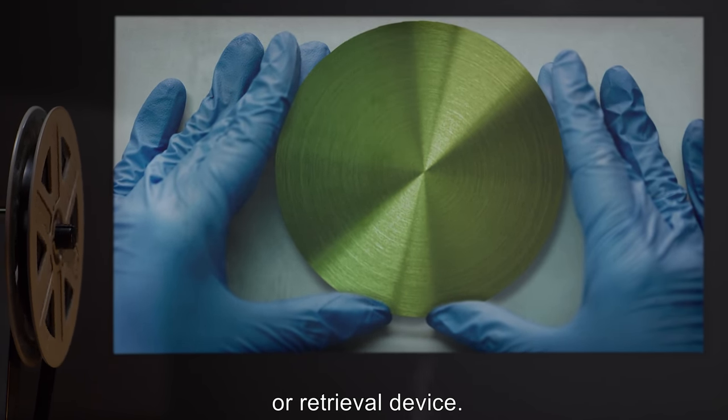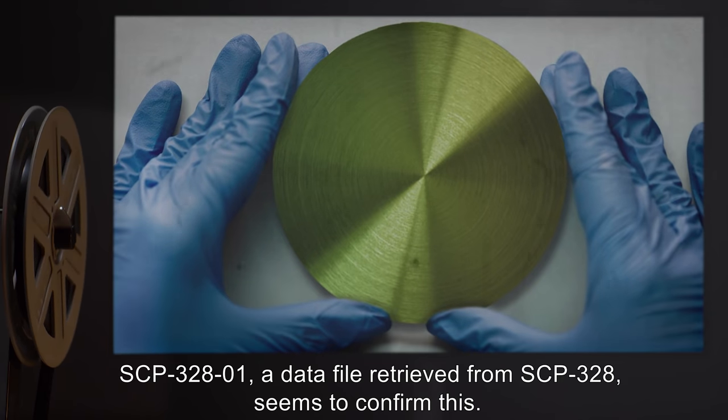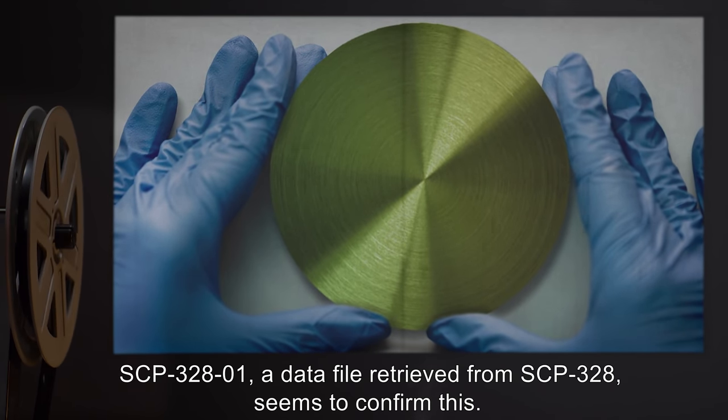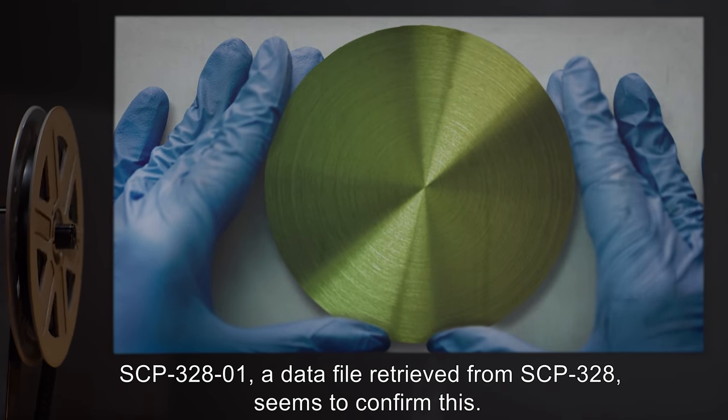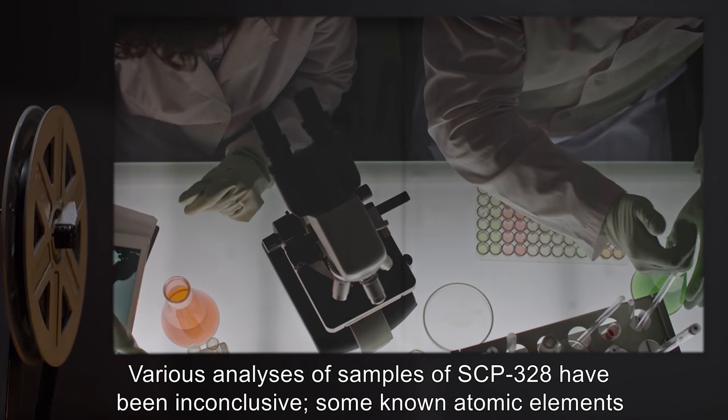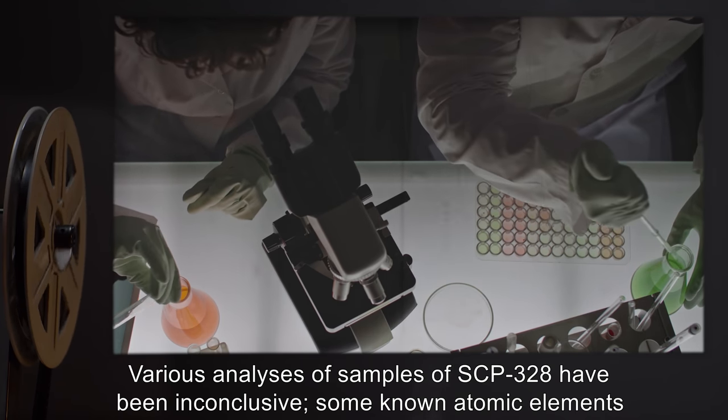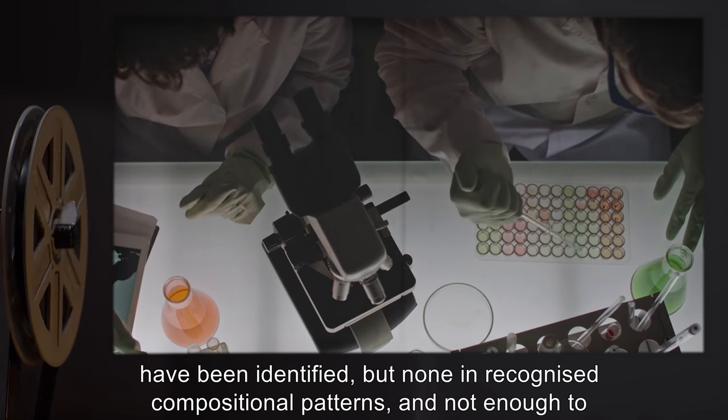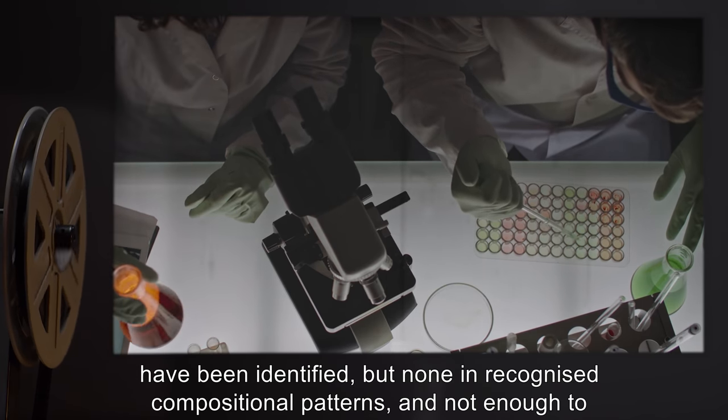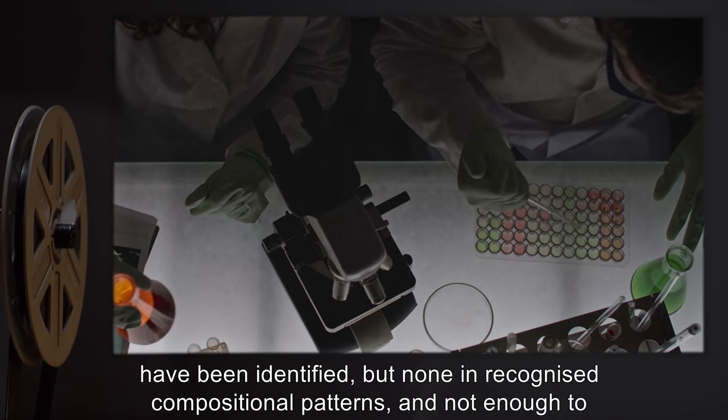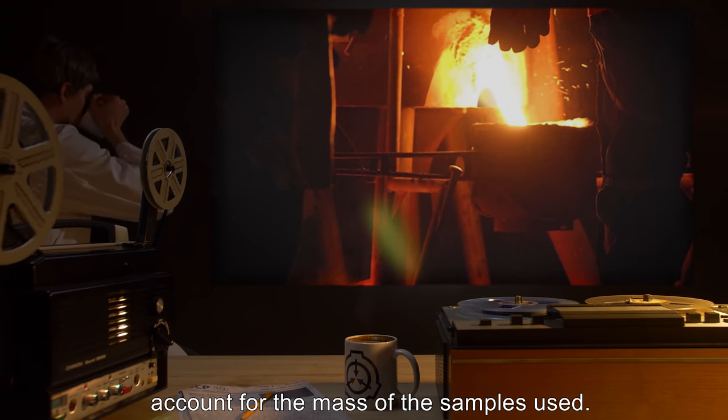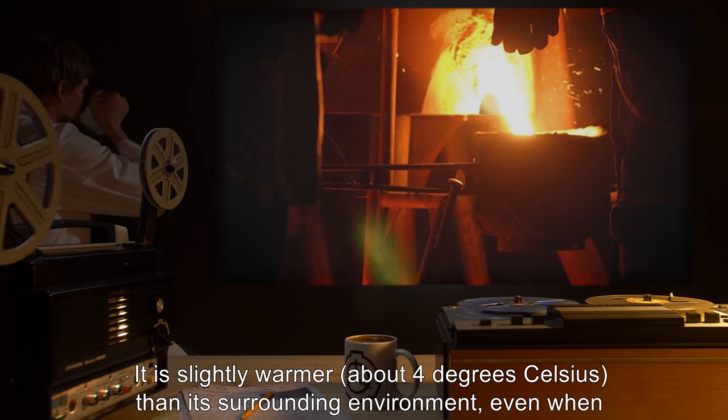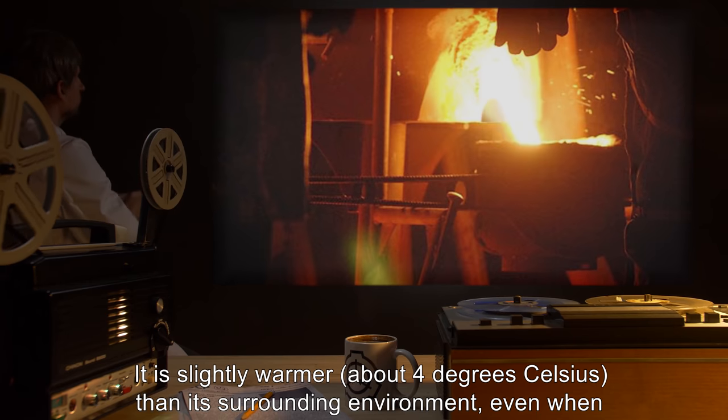SCP-3281, a data file retrieved from SCP-328, seems to confirm this. Various analyses of samples of SCP-328 have been inconclusive. Some known atomic elements have been identified, but none in recognized compositional patterns, and not enough to account for the mass of the samples used. It is slightly warmer, about four degrees Celsius, than its surrounding environment, even when subjected to extreme temperatures.